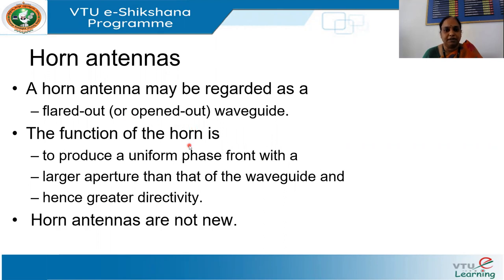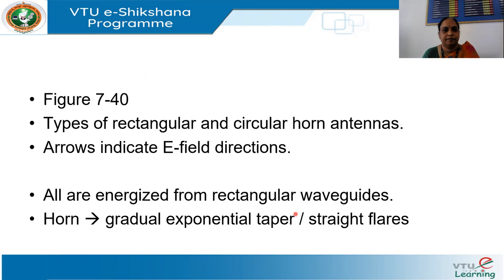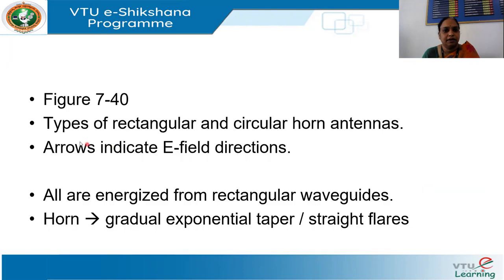Horn antennas are not new — they were constructed by Jagadish Chandra Bose somewhere in 1897. There are two types of horn antennas: rectangular horn antennas and circular horn antennas. The arrows in the figures indicate the electric field directions. The antenna is energized from a rectangular waveguide.